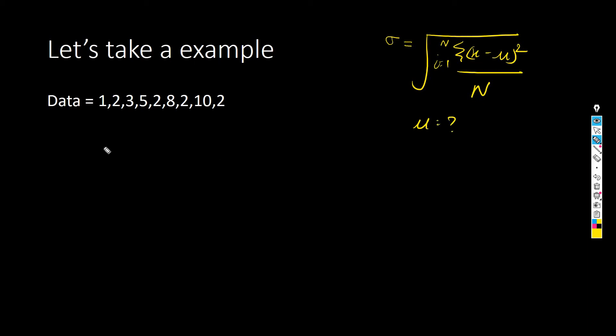What is mu? Mu is the population mean. It means we need to find the average of all the data sets. So let's try to find out the average.